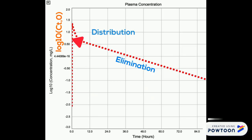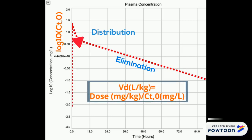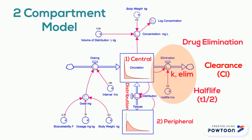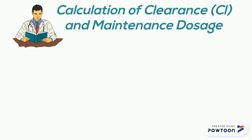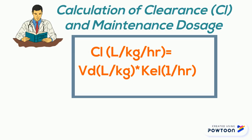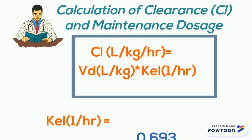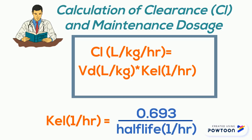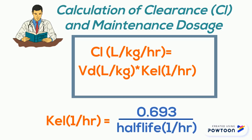We can see how close this is when we extrapolate the elimination curve back to time zero; that time-zero concentration is used to calculate the volume of distribution of the central compartment. The clearance is not typically provided in most formularies; a simple way to calculate it is to multiply the volume of distribution by the elimination constant, which is calculated by dividing 0.693 (the natural logarithm of 2) by the half-life of the drug.